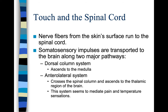Nerve fibers from the skin's surface run to the spinal cord. Somatosensory impulses are transported to the brain along two major pathways: the dorsal column system and the anterolateral system. The dorsal column system ascends to the medulla at the base of the brain stem. The anterolateral system crosses the spinal column and ascends to the thalamic region of the brain. The thalamus is in the middle of the brain, above the medulla. This system seems to mediate pain and temperature sensations.